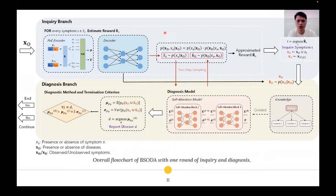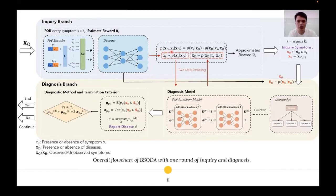This figure shows the BESOLDA process during a single round of inquiry and diagnosis. BESOLDA divides the task into two cooperative branches. The inquiry branch uses a VAE consisting of the encoder and decoder, while the diagnosis branch uses a supervised classification model to predict the disease. The inquiry branch determines which symptom to collect next based on the reward function used in ADI. Instead of using the partial VAE, BESOLDA employs a product of expert encoder, or POE encoder for short, to better handle partial observations. Disease X_D and symptom X_S are sampled given observed symptoms X_O from the VAE encoding distributions to estimate the expectations in the reward.